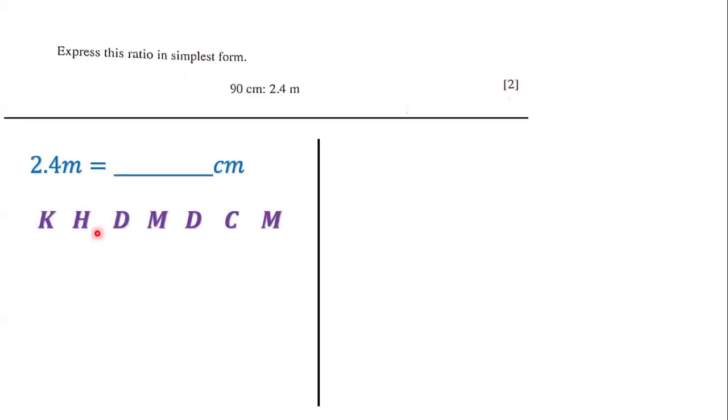In order to do that, we will use this useful acronym which states: King Henry Died Monday Drinking Chocolate Milk. Here the K stands for kilometers, the M stands for meters, the C stands for centimeters, and the M stands for millimeters.